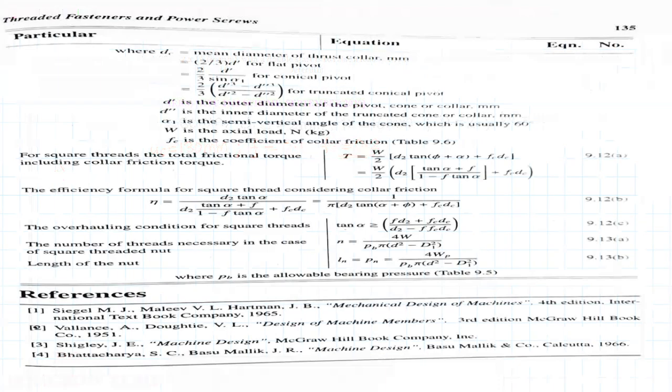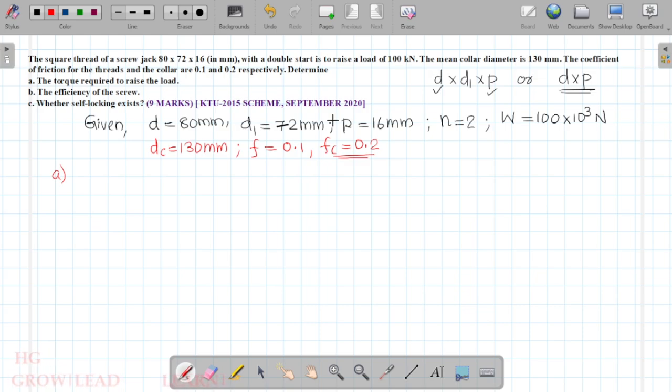For square threads, the total frictional torque including collar friction torque will be considered. From the data book, page number 135, equation 9.12a: T equals w by 2 into d2 into f plus tan alpha divided by 1 minus f into tan alpha.